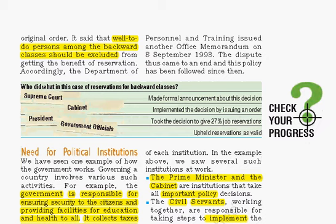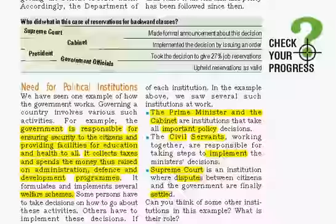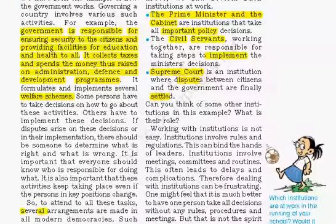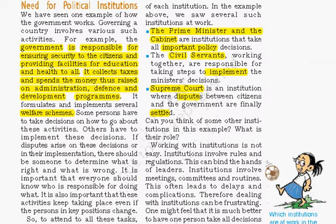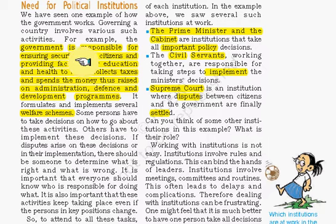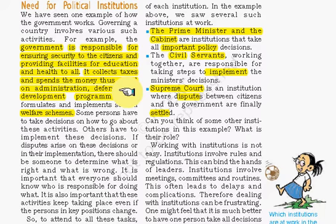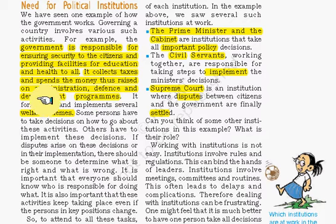We saw that various institutions were involved from this bill becoming a law. So why do we need these political institutions? The government is responsible for ensuring the security of citizens and providing facilities for education and health for all. It also collects taxes, spends money on administration, defense, and development programs. The government has various responsibilities on its shoulders, but there is separation of powers — hence various institutions work in their respective spheres.